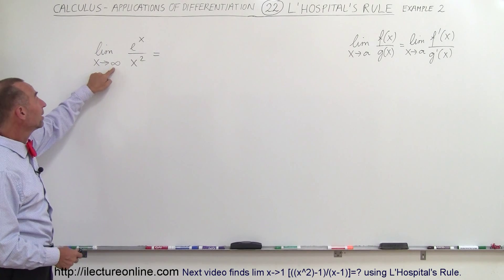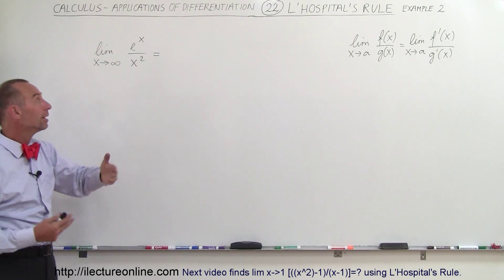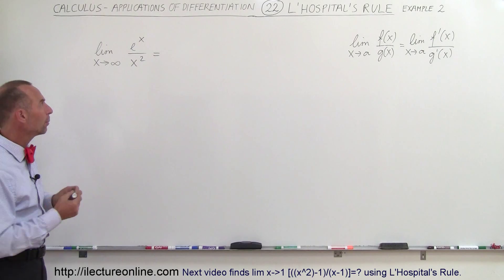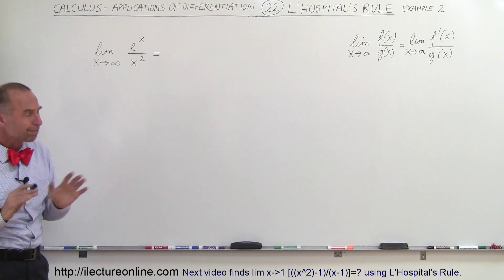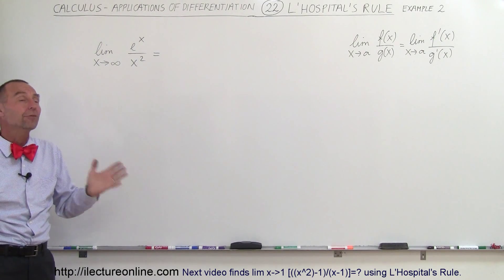When you let x go to infinity, e to infinity is infinity and infinity squared is infinity. So you end up with infinity divided by infinity, which of course is not a good answer. That's an indeterminate form.